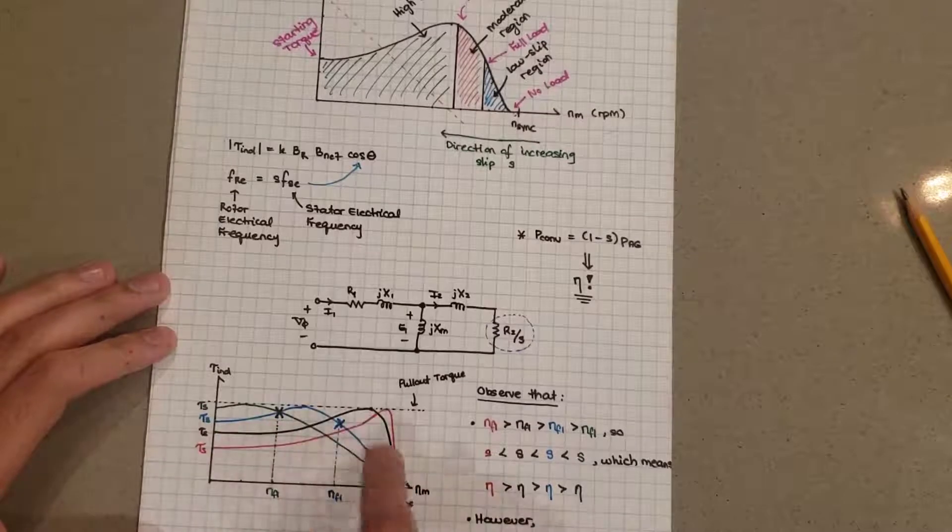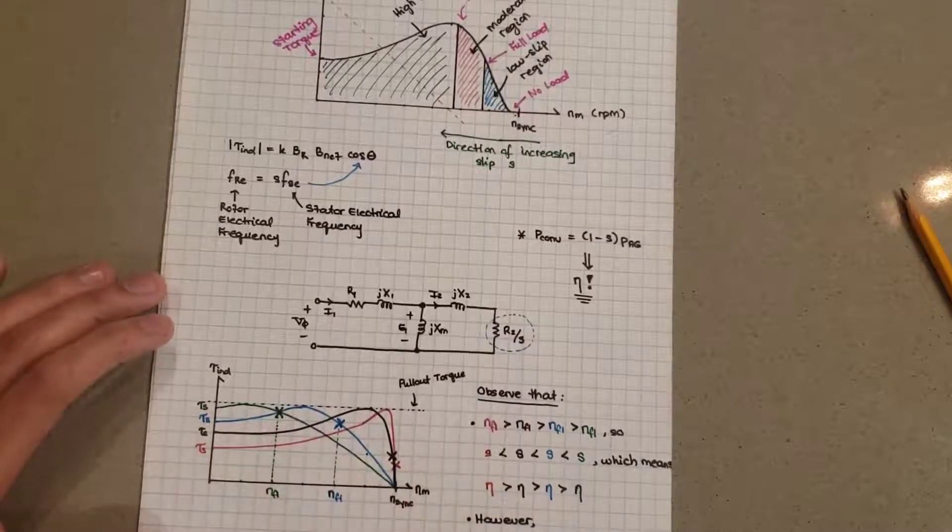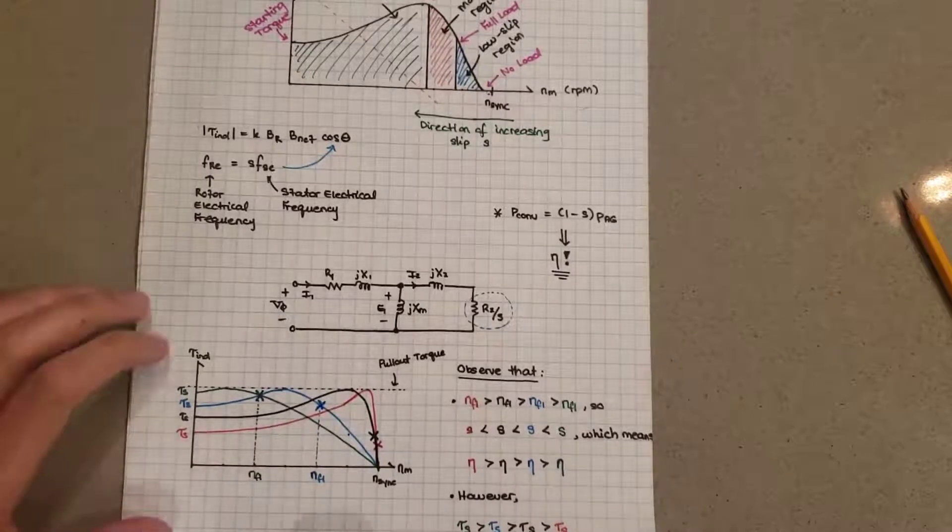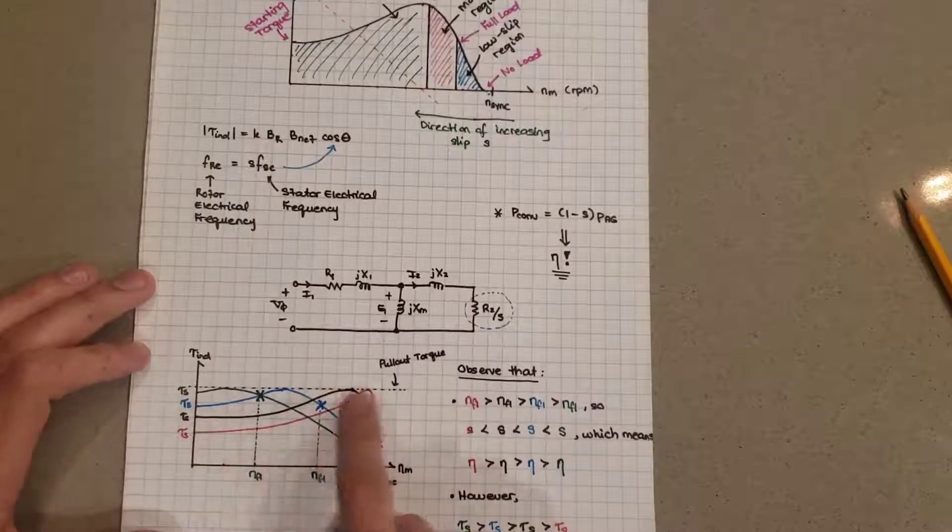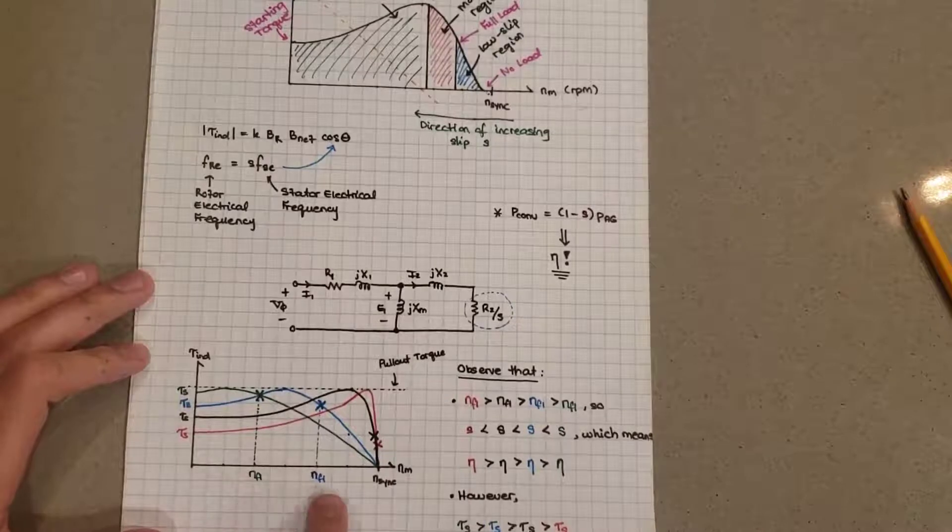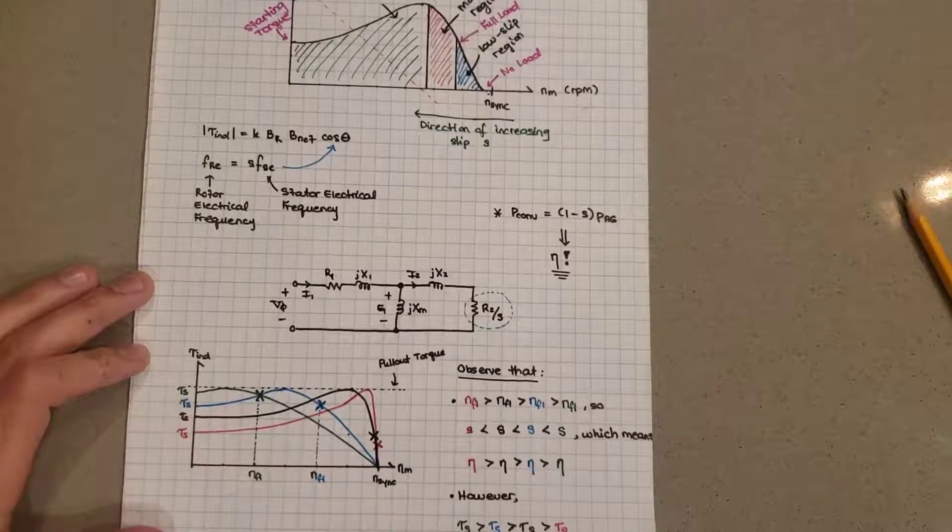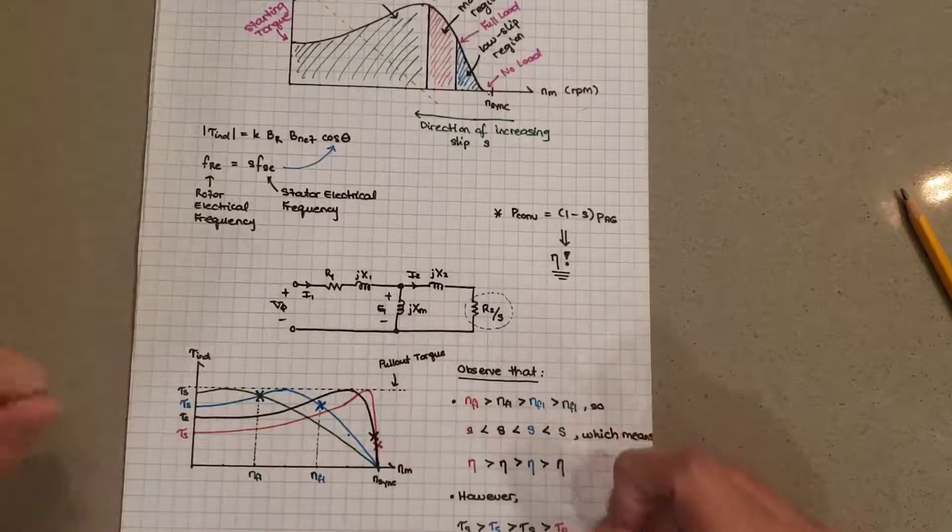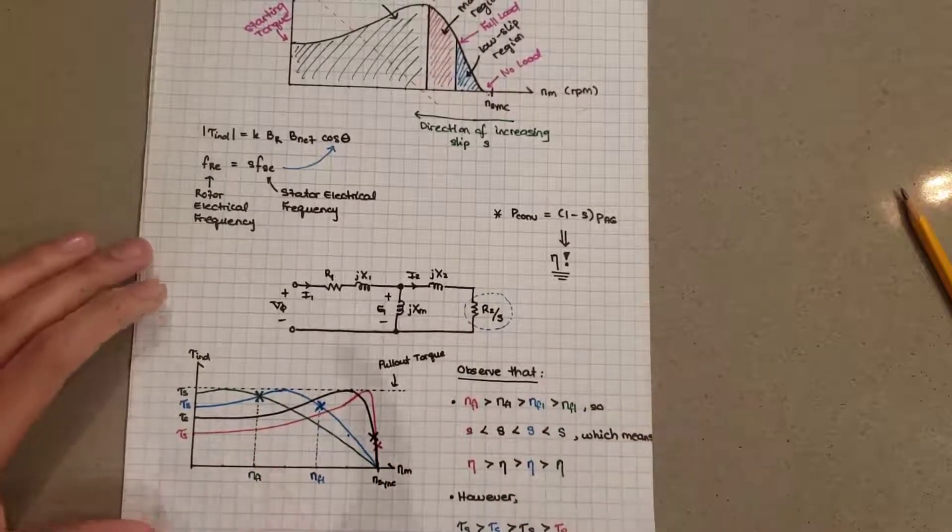So they have these kind of torque speed curves. I'm using the same kind of letters for each one, NFL and FL and so on and TS, tau S and so on. But like green with green and so on, that should hopefully be clear. So let's observe a few things.